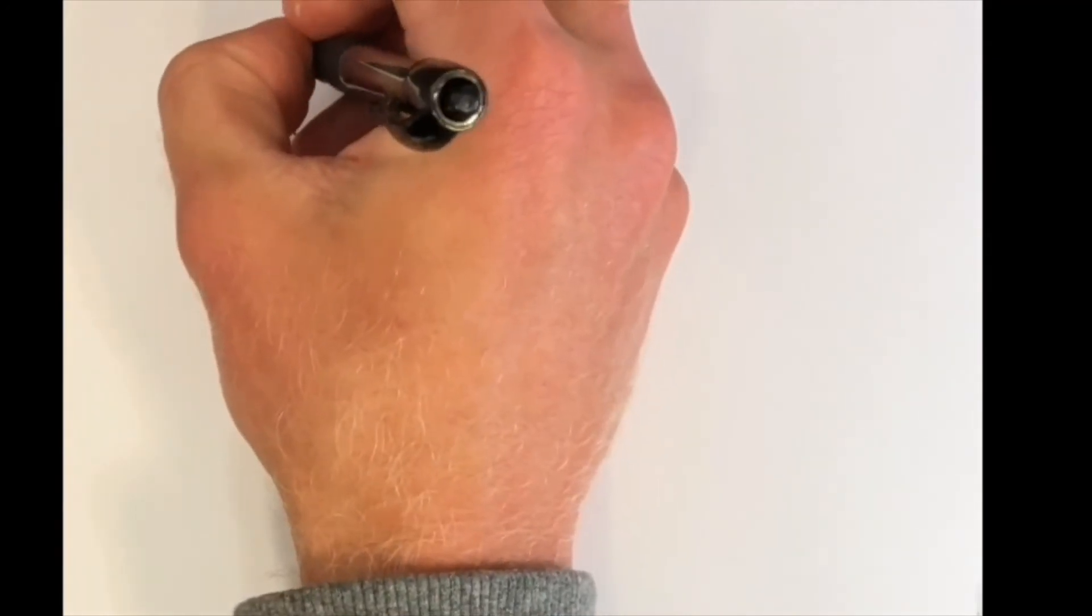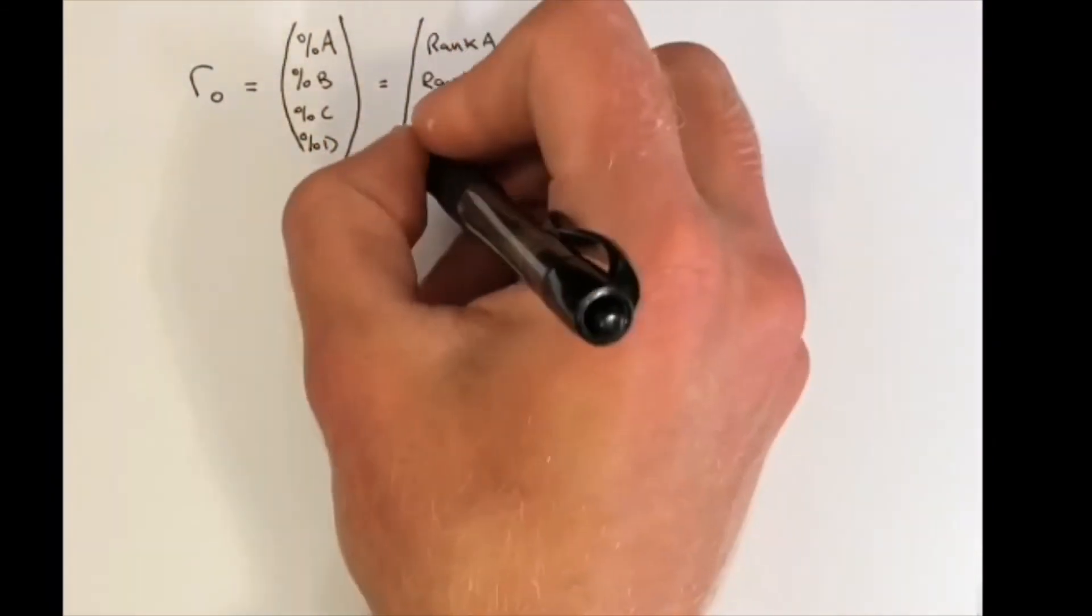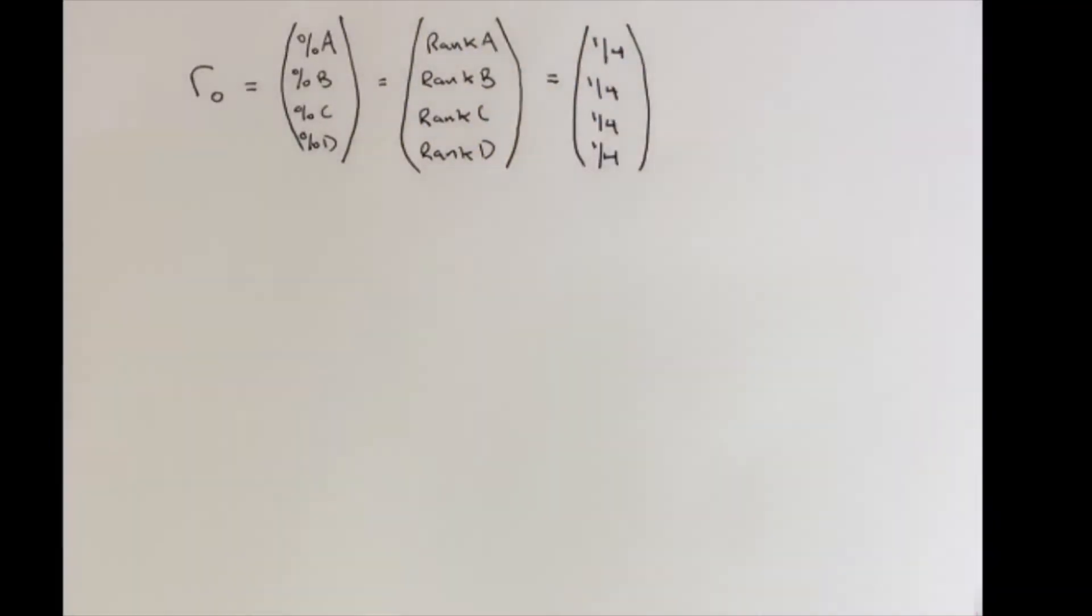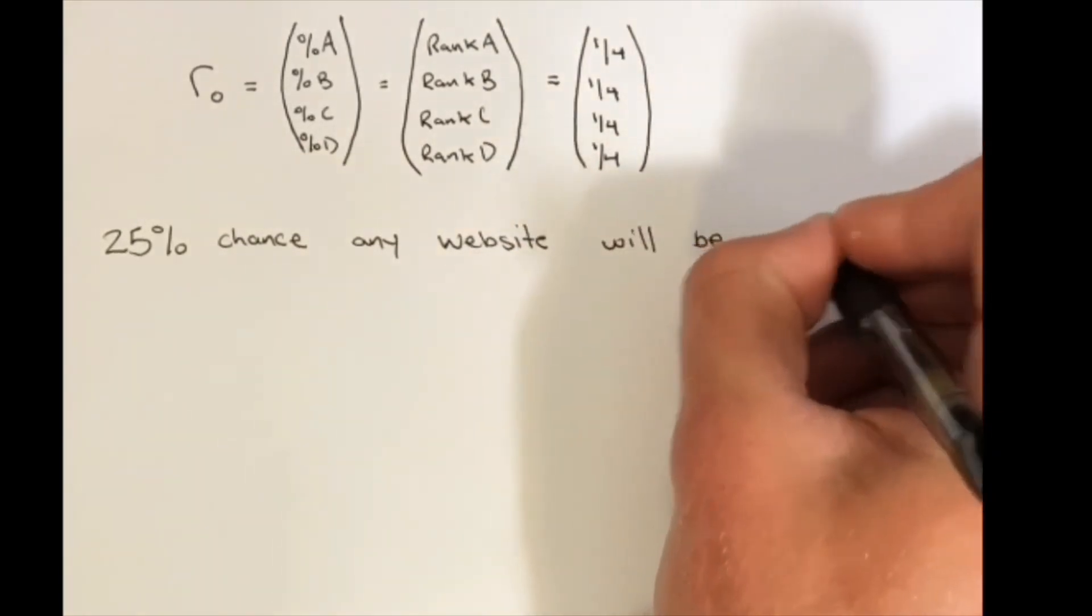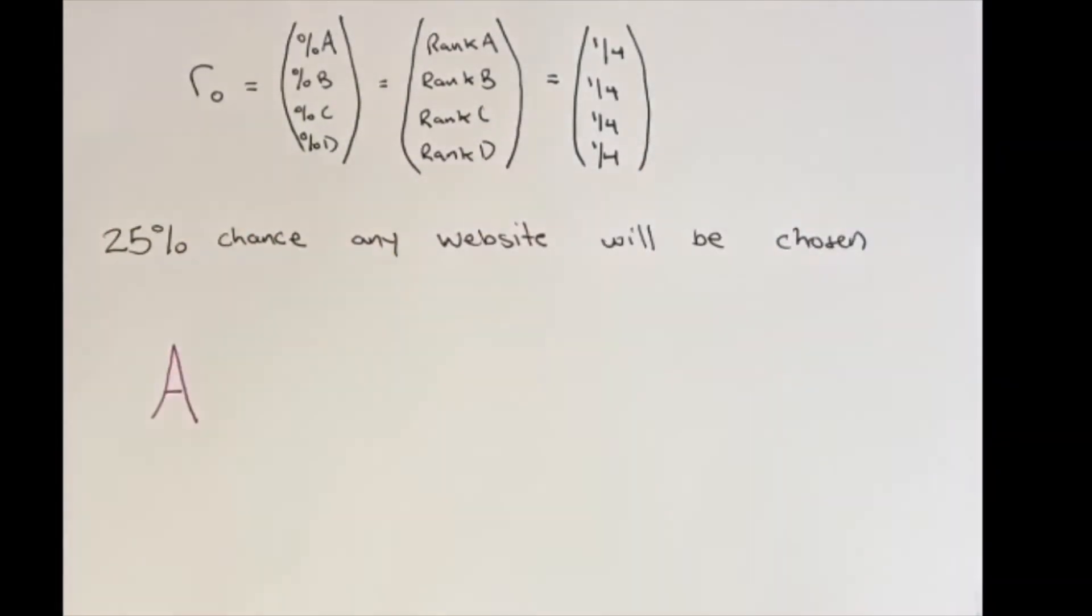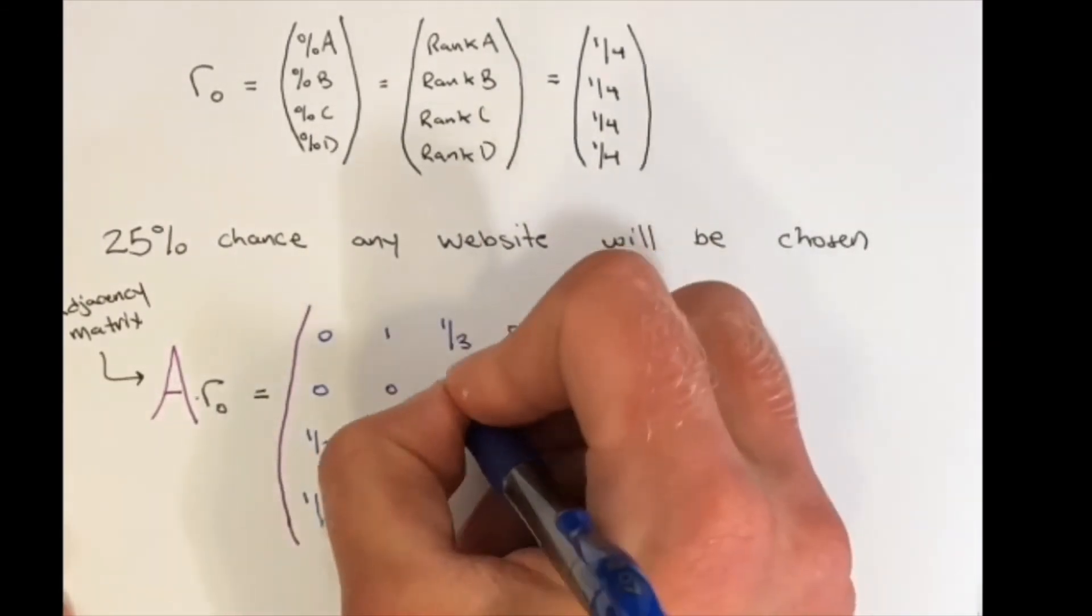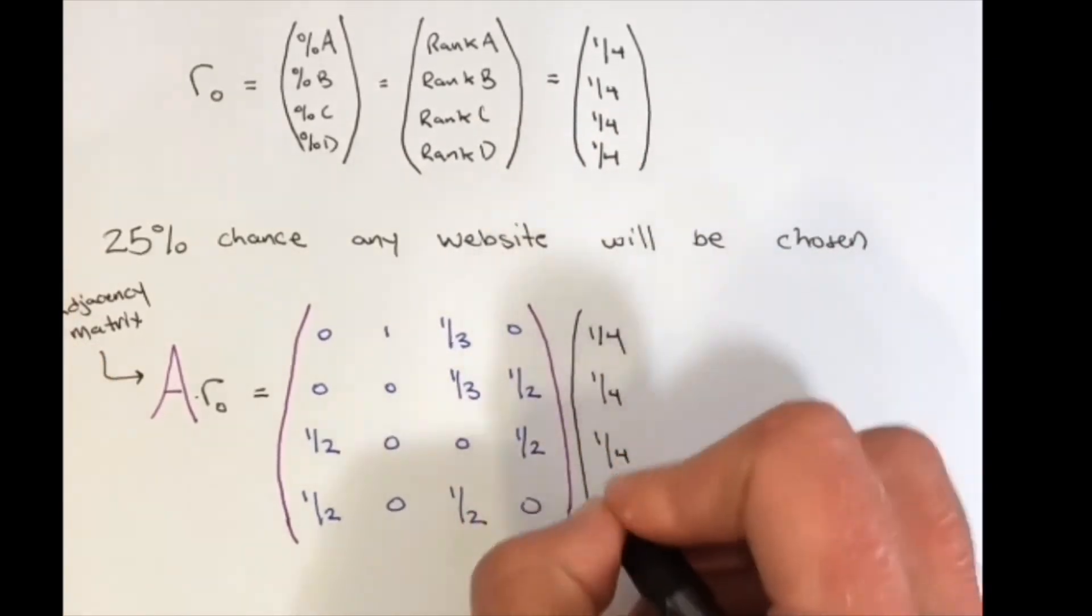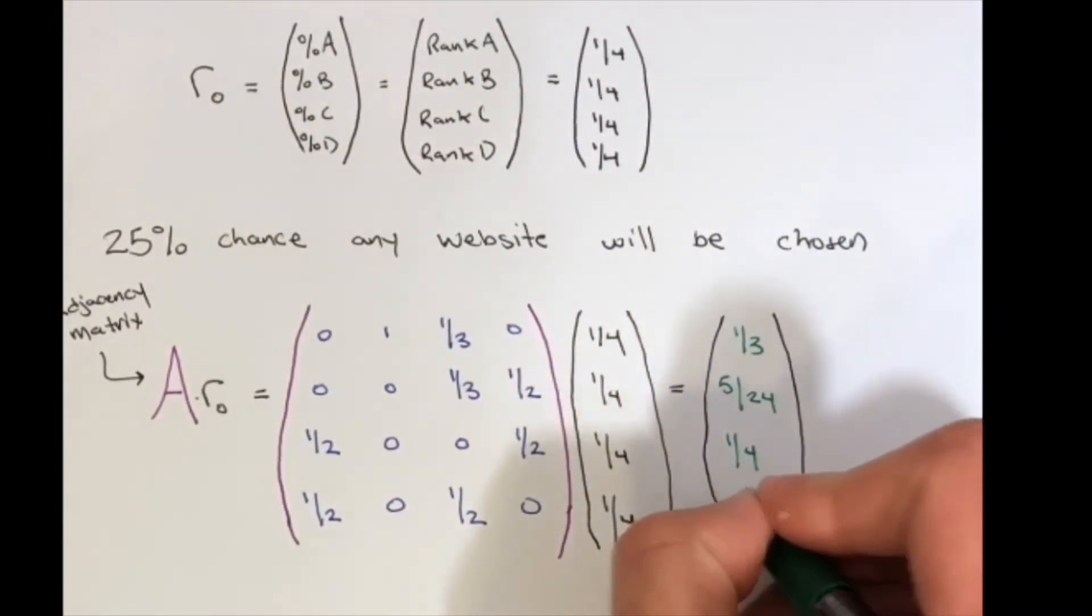Now we can use our link matrix to find the probability that a random user will end up on one of our four websites. To do this, we'll use matrix multiplication, where we'll multiply our link matrix by a vector we'll call R0. The entries of R0 will be one quarter, because there's a 25% chance the random user will pick any of our websites. Now we'll write out the matrix multiplication, where we'll multiply A, our link matrix, by R0, our vector. By multiplying the link matrix by R0, we get another vector, which we'll call R subscript 1.